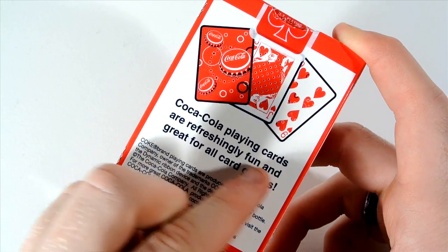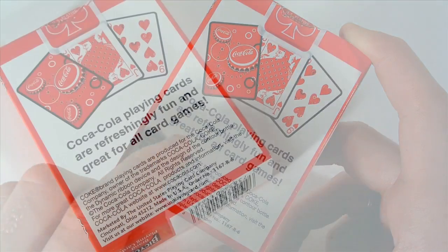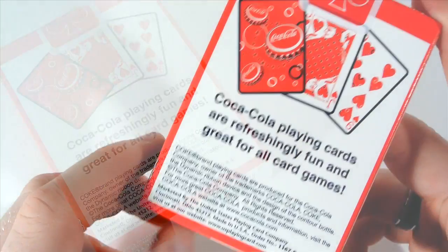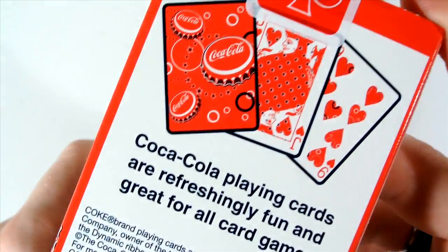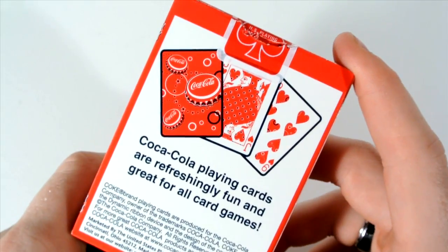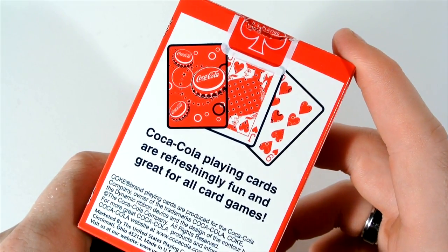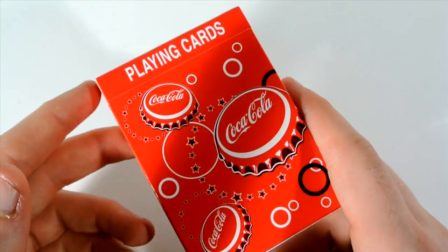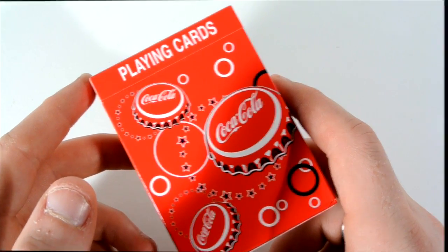The back design gives you some information on the copyright on Coca-Cola and the branded and it also has copyright for the United States Playing Card Company. It has Coca-Cola playing cards are refreshing, fun and great for all card games. Then it has a picture of the back design. It is a one way back and then it shows a jack of hearts and a nine of hearts. But this deck is a one way back but it's just a little fun deck and also it's kind of a memorabilia for Coca-Cola. So let's have a look at what you get inside the deck.